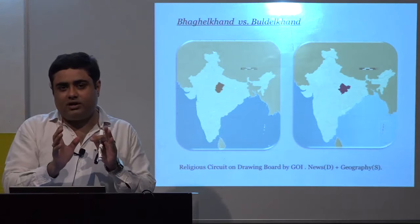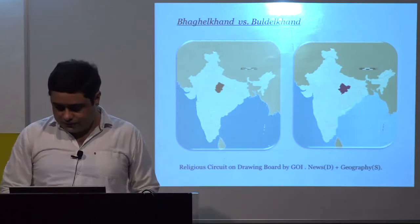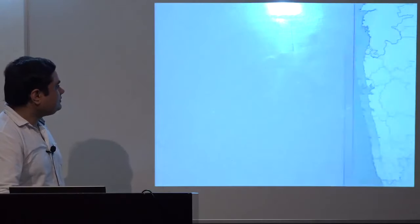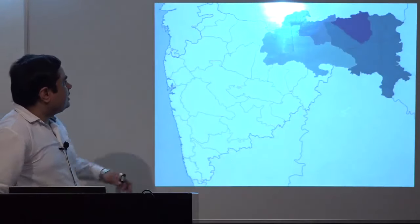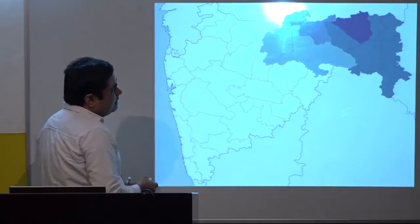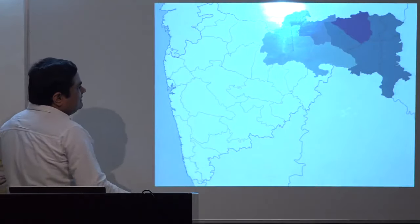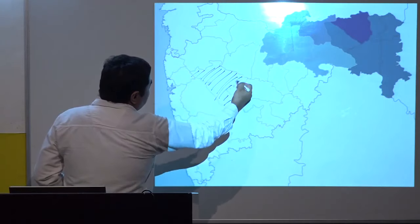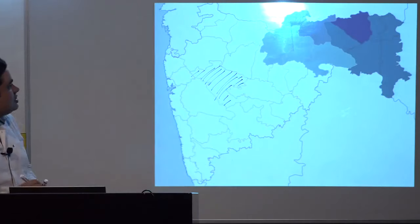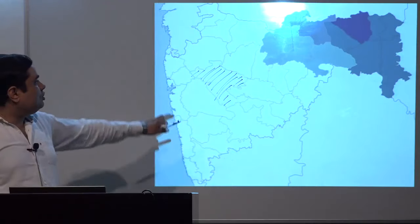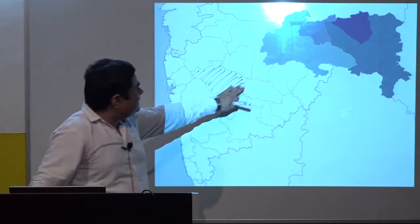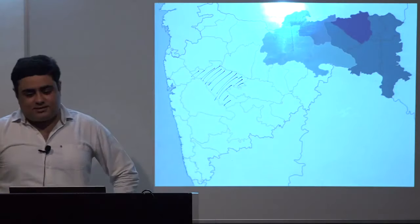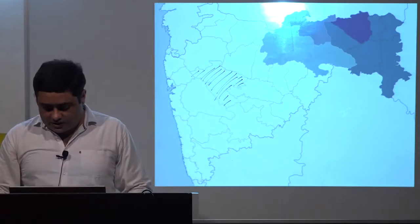Why was this question framed? All these religious places — Shirdi, Tirupati, Bodh Gaya — were on a religious circuit drawing board by the Government of India and were constantly in the news. So this question was taken from current affairs. It had a dynamic part — if you followed the news, you could have known about these places — and also a static part testing your geography knowledge. You were supposed to have a fair amount of geography knowledge as well.